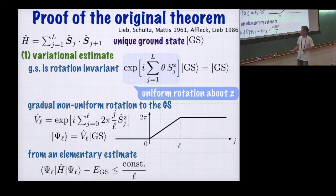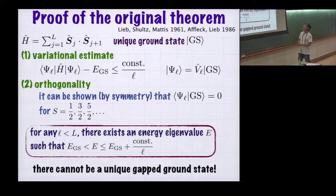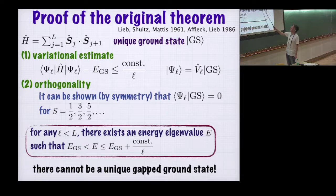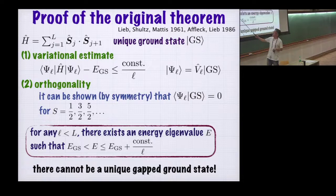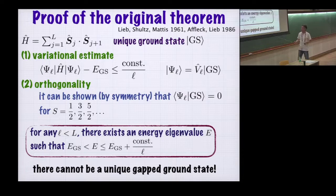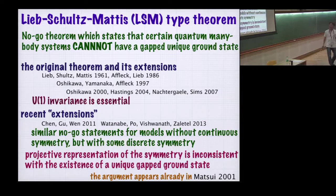The energy expectation value in this twisted state is only slightly higher than the ground state energy. But to complete the variational proof, we have to show that the ground state and this new twisted variational state are orthogonal to each other. Interestingly enough, this orthogonality can be shown generally by using symmetry, but only for half-integer spins. So this statement was proved for the Heisenberg antiferromagnetic chain with half-integer spins—there cannot be a unique gapped ground state.